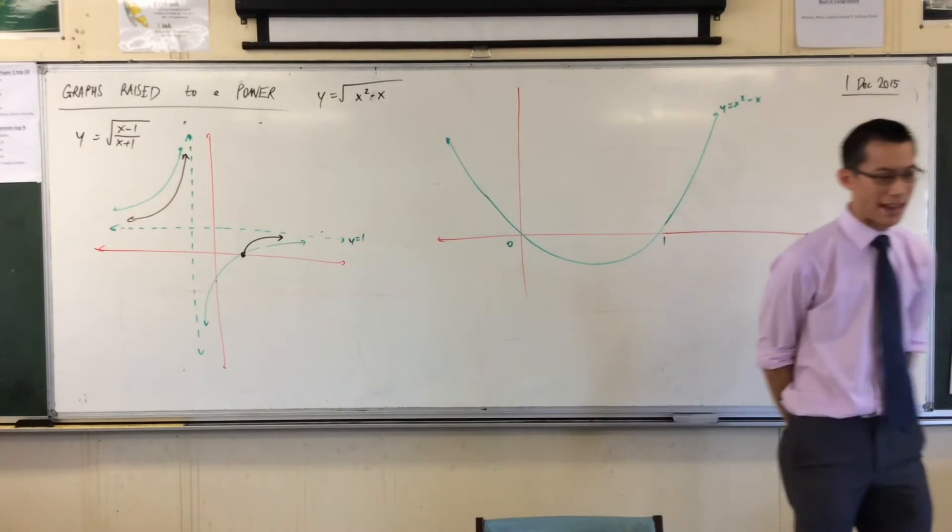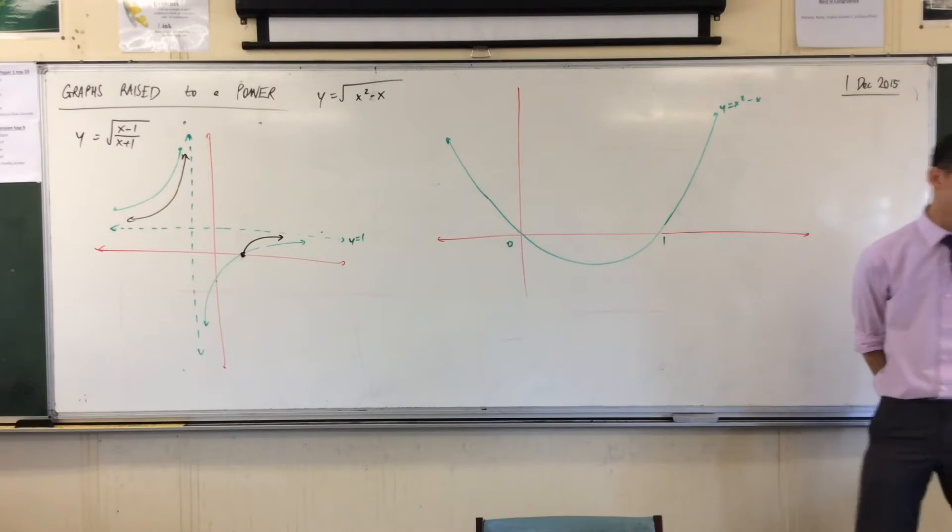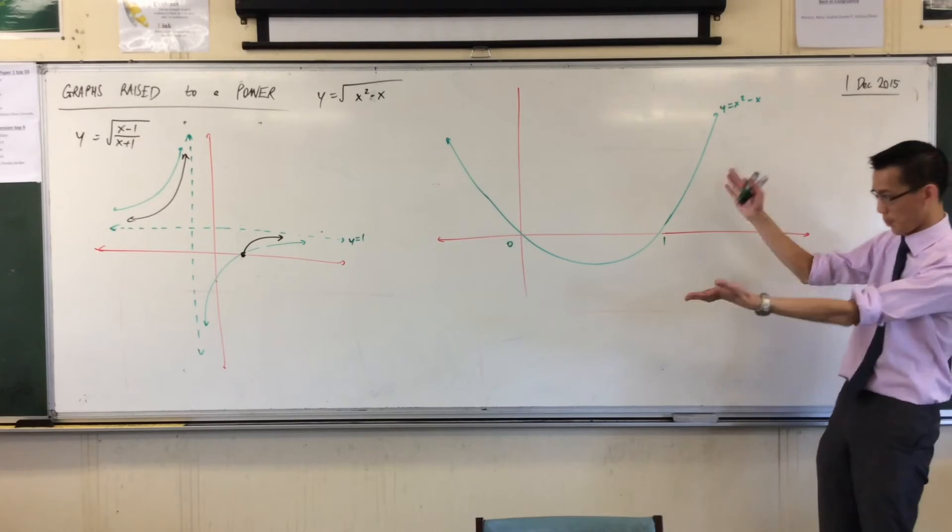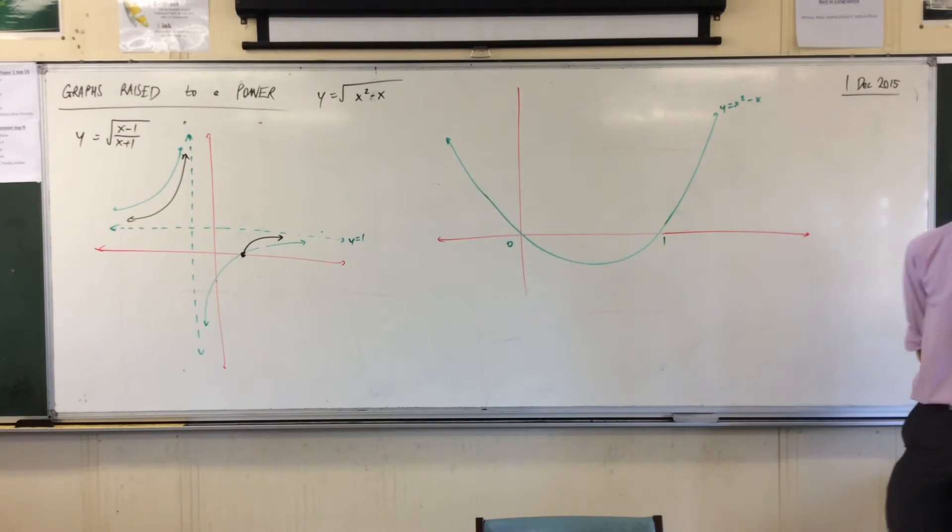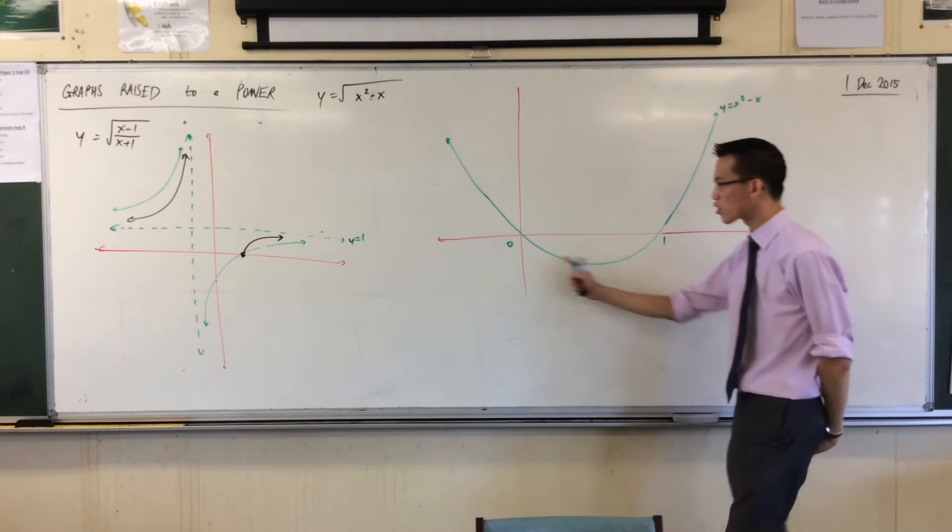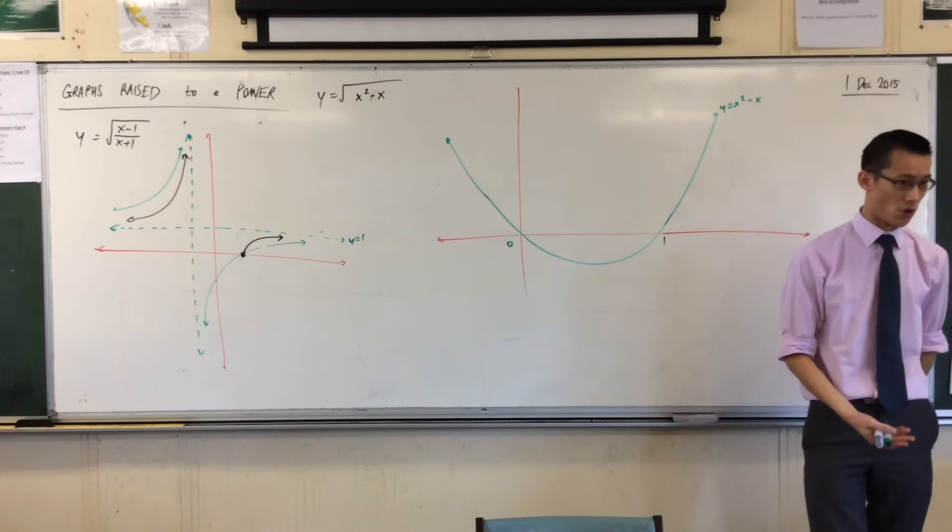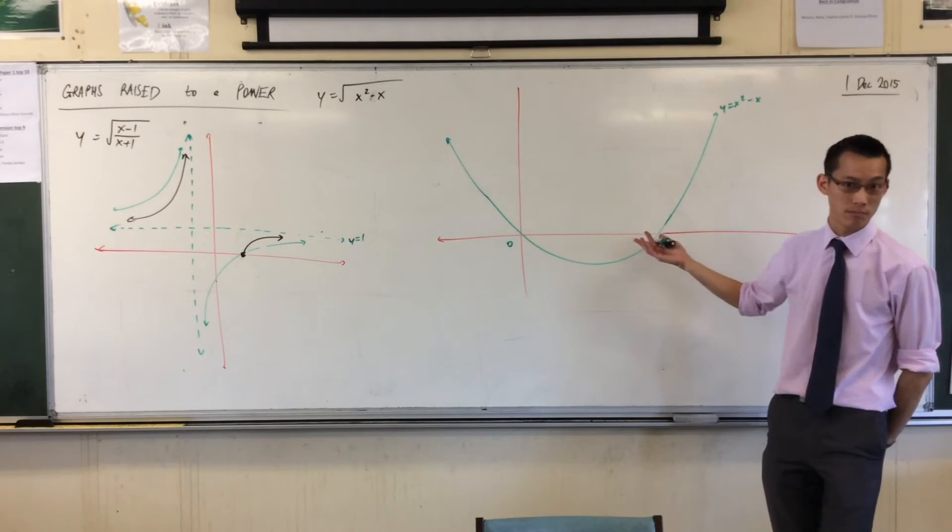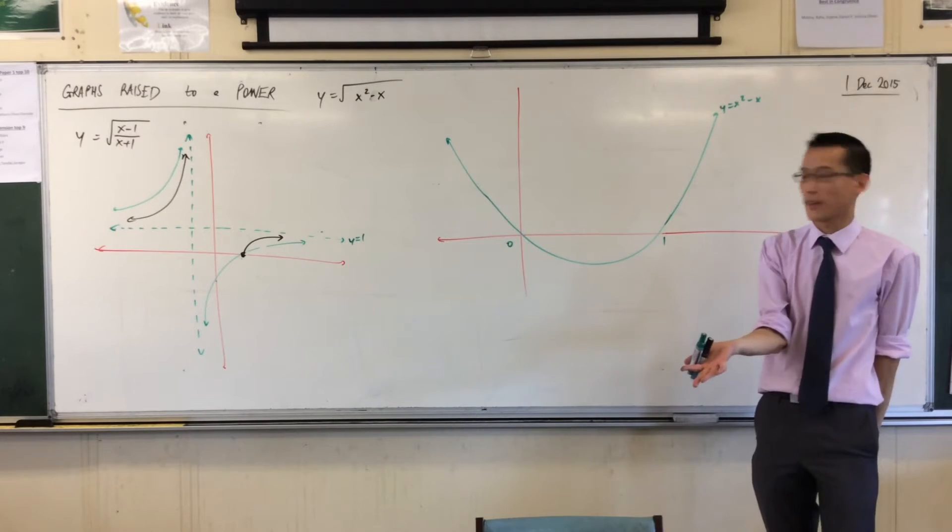You will notice I've drawn my graph with two things. Number one, I've drawn it unseasonably large. That probably doesn't surprise you about me because you know I love big graphs. But more interestingly, I have this huge portion of the graph that I know I'm going to have to ignore because it's negative, which means when I take the square root, it doesn't exist. I'm not going to draw anything for that part.